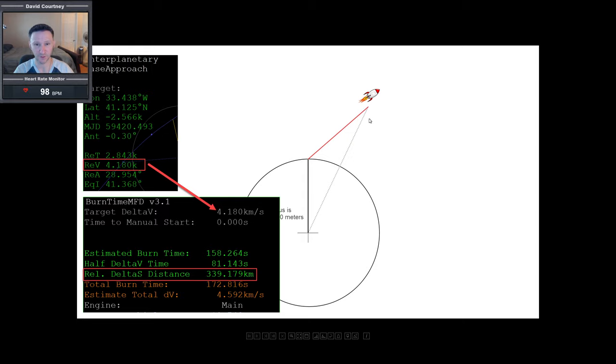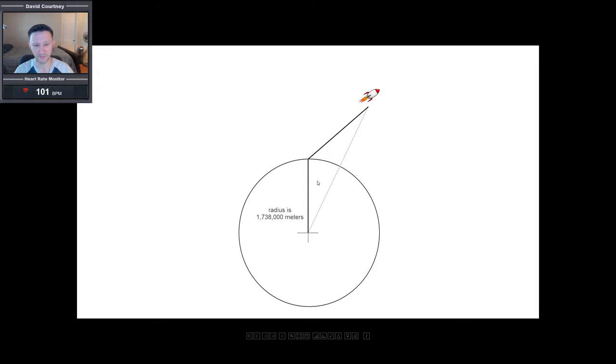Well, if I take that number and plug it into Burn Time Calculator, by pressing the DV button, Burn Time Calculator gives me this distance, which is 339,179 meters. And that is what this red line represents. This red line represents 339,179 meters or 339.179 kilometers. So we have now solved two parts of our triangle. We now have this side and we have this side. So all we have left to do is to figure out what the length of this side is. And then we can do a simple calculation to find out at what altitude we can begin our breaking burn.